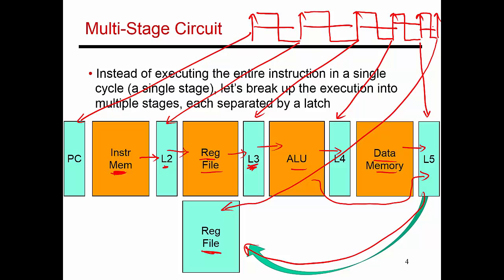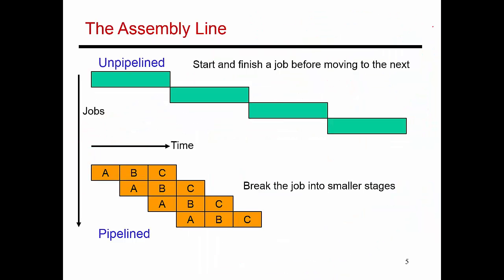Next, I'm going to pipeline this design. Before I talk about that, let me step away from an instruction flowing through circuits and talk about a completely different analogy. Pipelining is best explained with the example of a car being manufactured in a factory. Consider first the unpipelined design, where you have all of your workers all working together trying to build one car. You have different people building the engine, the chassis, painting the car — all of this is happening at the same time — and it takes 24 hours to produce one car. So 24 hours later, one car rolls out of this factory.